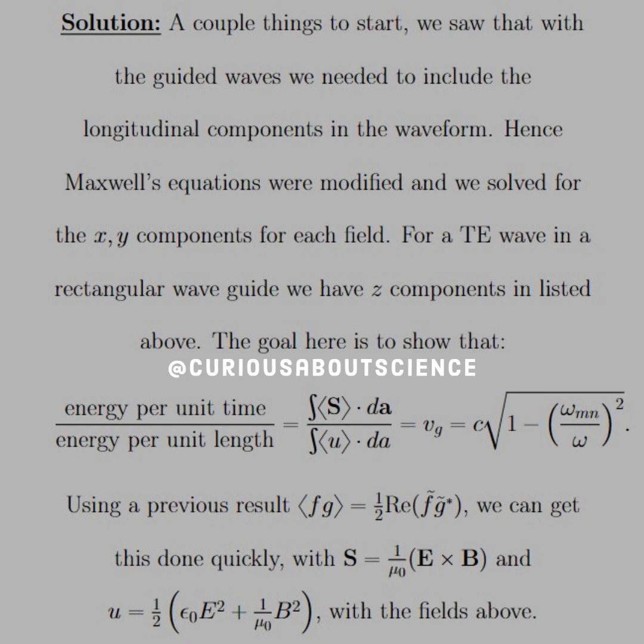So the integral average S over average U is equal to the group velocity, which is equal to C times the square root of one minus omega_mn over omega squared.